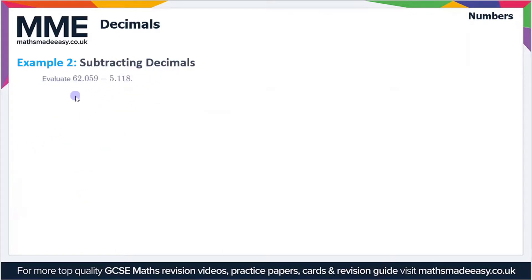Moving on, let's look at some subtraction here. So 62.059 minus 5.118. Again, we're doing a column method here but this time subtraction.